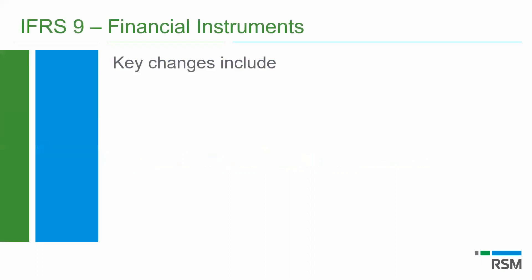Some of the key changes I would like to highlight from IAS 39 to IFRS 9. I do think it's been some relatively good changes — it's simpler. That whole idea of financial assets, where we all debated which category they fall in — the held-to-maturity, the available-for-sale, the loans and receivables — and we sat around reading the definitions and we couldn't decide where it went. They have really changed quite a lot and simplified that, in my opinion, to quite a large degree.